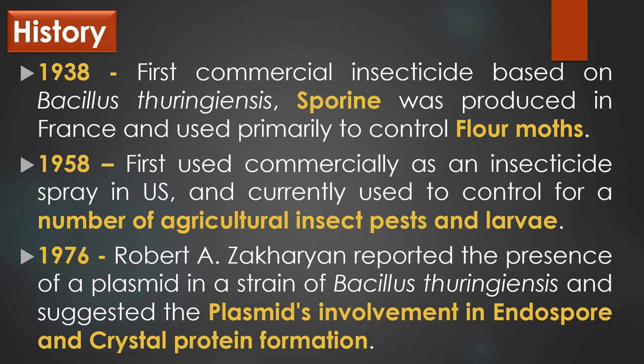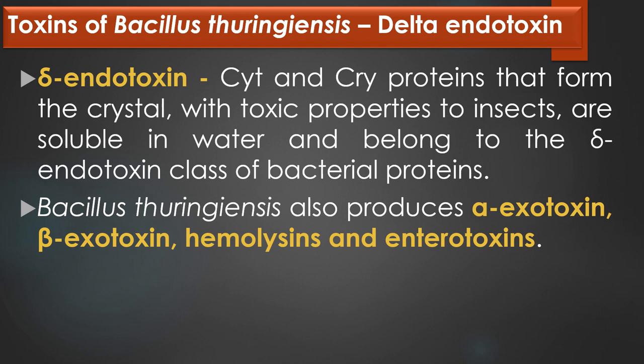Next, toxins of Bacillus thuringiensis, particularly delta toxin. The toxin produced by Bacillus thuringiensis has been used as an insecticide spray since the 1920s and is commonly used in organic farming. CYT and CRY proteins form the crystal with toxic properties to insects; they are soluble in water and belong to the delta toxin class of bacterial proteins. Besides this, Bacillus thuringiensis also produces several other toxins such as alpha-exotoxin, beta-exotoxin, hemolysins and enterotoxins.